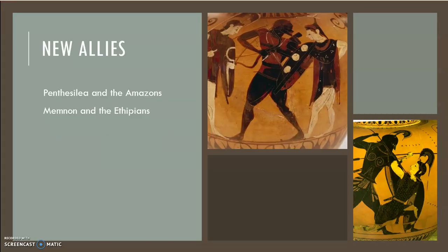Two very famous characters in mythology show up in Troy to fight with the Trojans against the Greeks and specifically against Achilles. The first is a famous warrior queen named Penthesilea, who is the queen of the Amazons — a tribe of warrior women who live on the shores of the Black Sea in modern-day Turkey. Penthesilea is beautiful but a fierce warrior, convinced she can go up against Achilles and win. But when they fight one on one, Achilles winds up killing her.